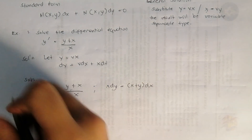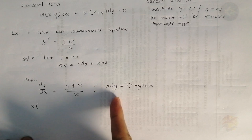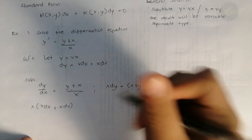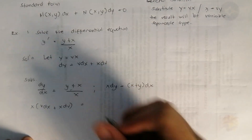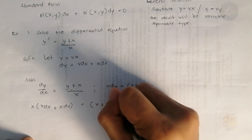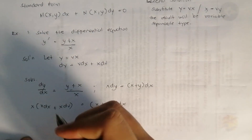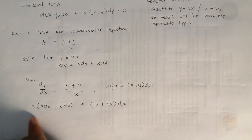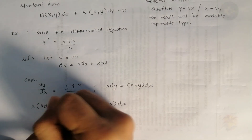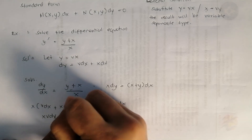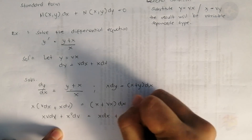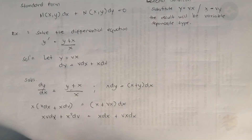Substituting, we get: x times (v dx plus x dv) equals (x plus vx) dx. Distributing: vx dx plus x² dv equals x dx plus vx dx.